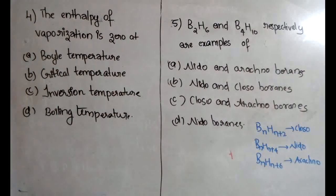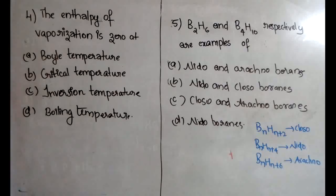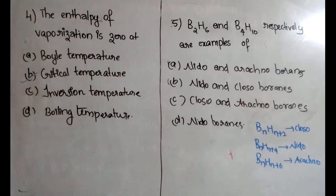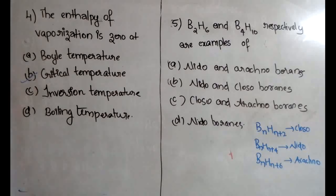The fourth question asks at which temperature the enthalpy of vaporization is zero. The answer is option B — the critical temperature. Above the critical temperature, there is no liquid and vapor phase coexisting, so the enthalpy of vaporization becomes zero. Above the critical temperature, liquid and vapor phases simply do not exist.